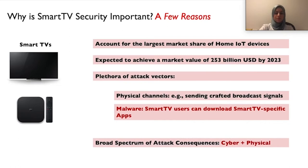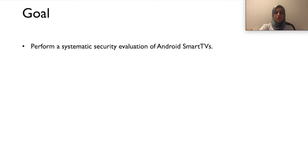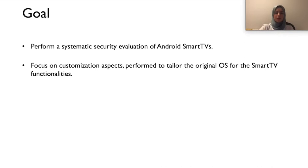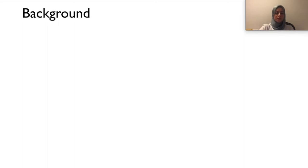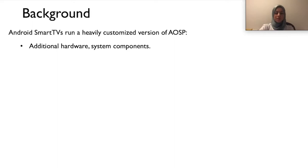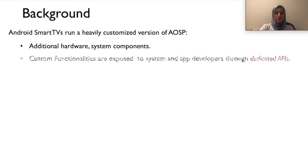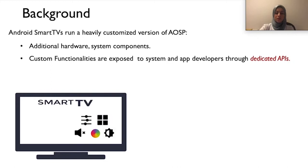To proactively address this attack model, we perform in this study an evaluation of Android Smart TV security. Our evaluation particularly targets customization aspects performed by Smart TV vendors. Android Smart TVs typically run a heavily customized version of AOSP with additional hardware and system components. The custom functionality is usually implemented by customizing Android system services, and exposed to framework developers via dedicated APIs, which allow triggering and managing different Smart TV functionalities, including those related to physical aspects such as display and audio control.